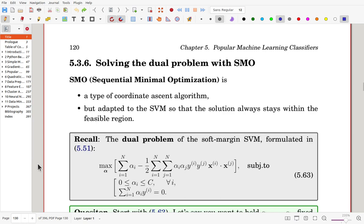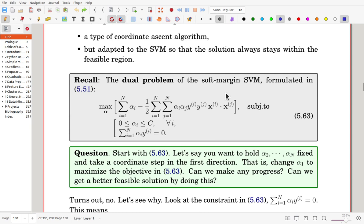Let's start with recall the dual problem of the soft margin SVM. Here the objective is to find alpha which maximizes the objective function subject to these constraints. Here we have a question. Can we update alpha values one by one? More specifically, withholding alpha 2 to alpha n, can we update in the first direction alpha 1? Can we change alpha 1 to maximize the objective? Can we make any progress yet the solution is feasible?